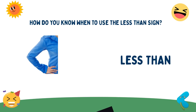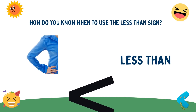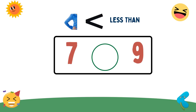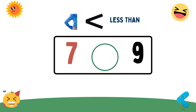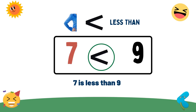How do you know when to use the less than sign? Let's find out. Let's say we have these two numbers: 7 and 9. 7 is the first number and 9 is the second number. We use less than when the first number is smaller than the second number. Therefore, 7 is less than 9.